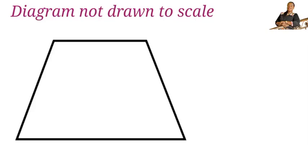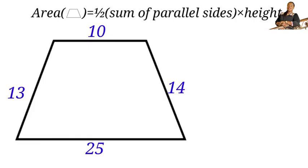We are given a trapezium with sides 25, 14, 13, and 10 units. We are to find the area of the trapezium. The formula for finding the area of a trapezium is half times the sum of the parallel sides times the height. We are given the sides but not the height, so we have to find it first.